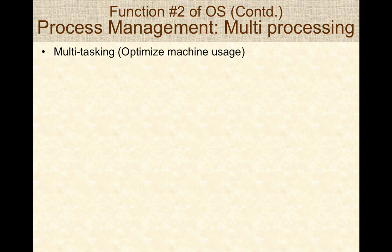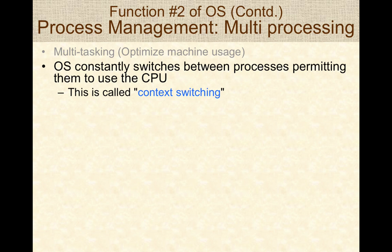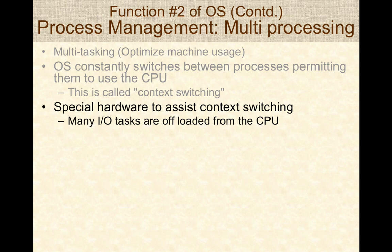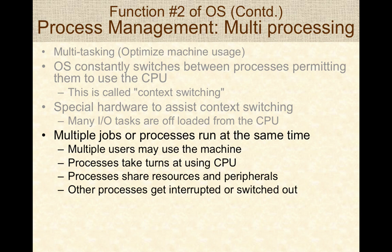Typically on desktop machines, operating systems run in multitasking mode. Many programs are run simultaneously, and the operating system constantly context switches between different processes, permitting them to take turns using the CPU. This process of switching between processes is called context switching. Special hardware on the CPU enables effective context switching — if a process is performing I/O operations, it will be context-switched out and the I/O operation handled by special hardware. The operating system kernel handles context switching using different strategies to enable equitable and effective use of computational resources.